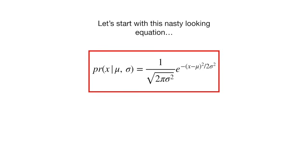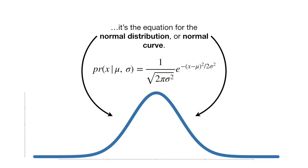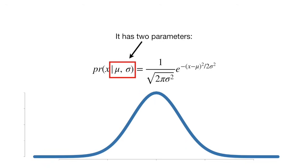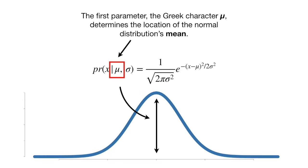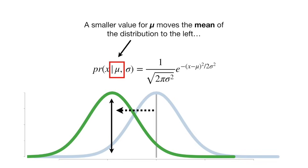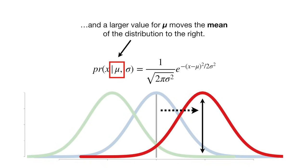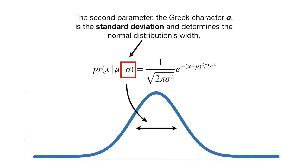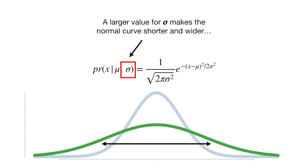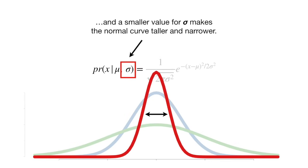Let's start with this equation — it's the equation for the normal distribution, or normal curve. It has two parameters. The first parameter, the Greek character mu, determines the location of the normal distribution's mean. A smaller value for mu moves the mean to the left, and a larger value moves it to the right. The second parameter, sigma, is the standard deviation and determines the distribution's width. A larger sigma makes the curve shorter and wider, and a smaller sigma makes it taller and narrower.